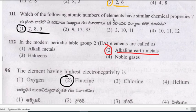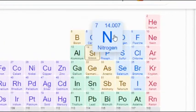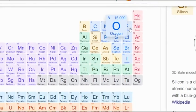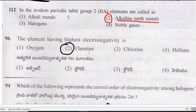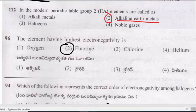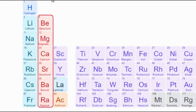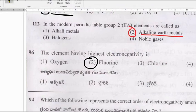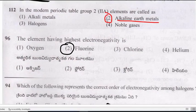Question: Which of the following atomic numbers of elements have similar chemical properties — 7, 8, or 9? Atomic numbers 7, 8, and 9 have similar chemical properties. Question: In the modern periodic table, 2A elements are called alkaline earth metals.